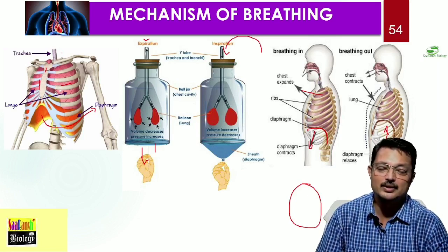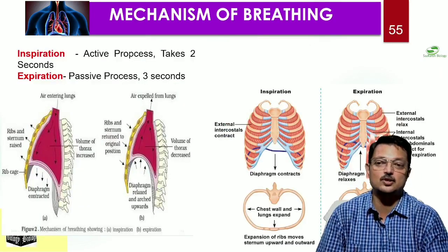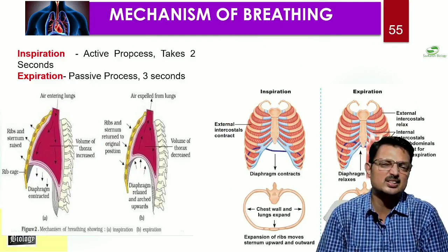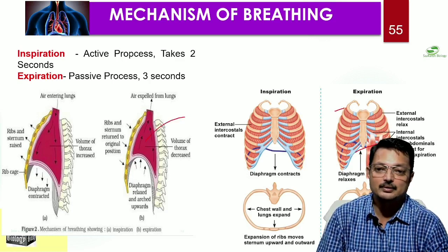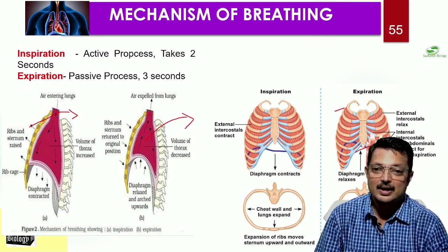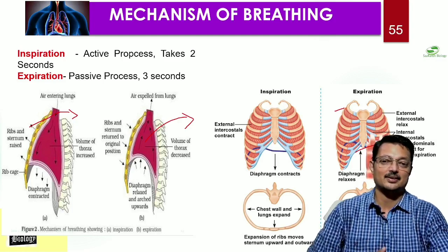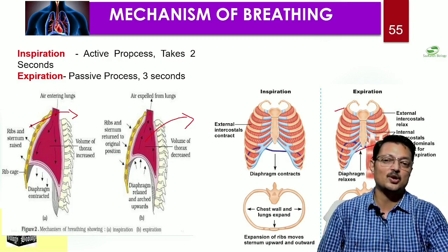Inspiration is an active process and takes around two seconds, whereas expiration is a passive process taking three seconds. During inspiration, the diaphragm contracts and the thoracic volume increases, so air moves from outside to inside. During expiration, the diaphragm retains its position and volume decreases, so air moves out. When you take a breath in, your chest moves out and so does your abdomen. Increase and decrease in thoracic volume causes inspiration and expiration respectively.